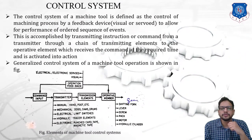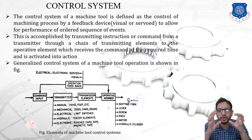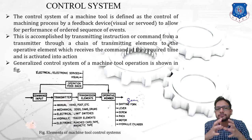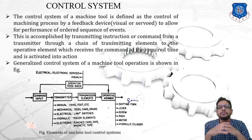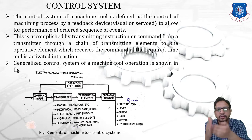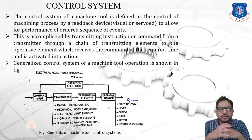Let's begin with our first topic: what is a control system? The control system of a machine tool is defined as the control of a machining process. We are going to control the machining operations by means of a feedback device — that could be either visual or servo — to allow for the performance of an ordered sequence of events. We are going to control the operations using a feedback mechanism.